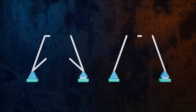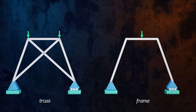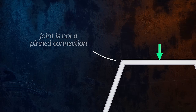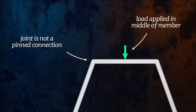These assumptions are what differentiate a truss from a frame. Unlike trusses, frames don't necessarily have pin joints, and so members can carry bending moments. A frame can also have loads applied directly to its members.